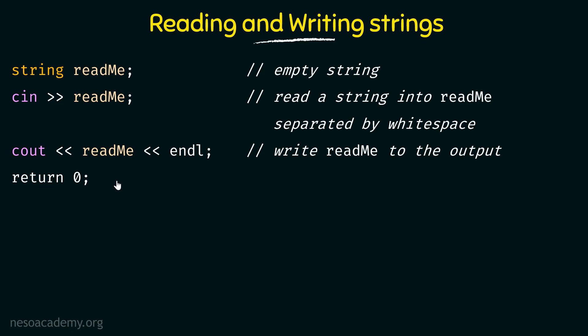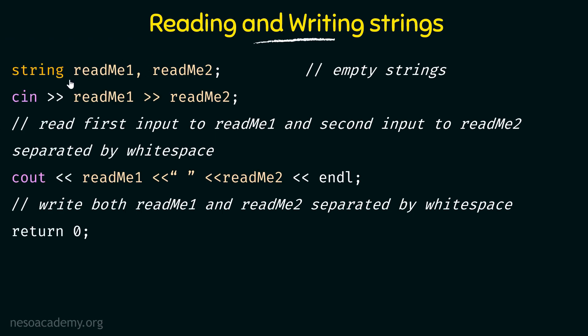We saw that we can print only the first word entered and everything after whitespace is discarded. So, what if we want to print both words? That brings us to the next method. Here we declare string readme1 and readme2 — two strings, both initially empty. Then we say cin >> readme1 >> readme2. It means read the first input into readme1 and the second input into readme2, separated by whitespace. The first word will be stored in readme1 and once a whitespace is given, the next word will be stored in readme2. Then we print readme1 and readme2 separated by a space.